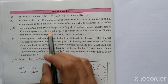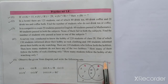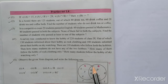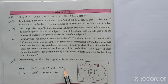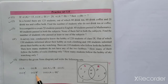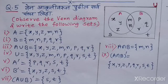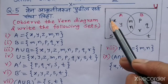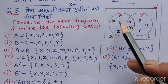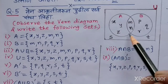Now question 5 from practice set 1.4. Observe the given Venn diagram and write the following sets. The rectangle represents universal set U, the left circle represents set A, and the right circle represents set B. We need to write sets A, B, A∪B, U, A', B', and (A∪B)'. Set A contains elements X, Y, Z, M, N.